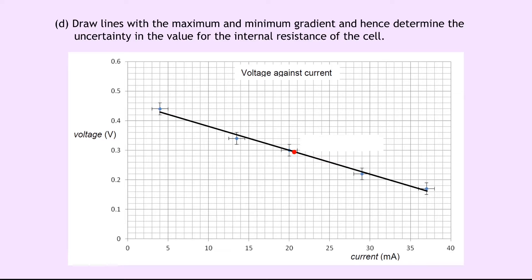Part D says to draw lines with the maximum and minimum gradient and hence determine the uncertainty in the value for the internal resistance of the cell. Our maximum and minimum gradients need to pass through all the error bars and also the centroid, just like the line of best fit. For the maximum gradient, the dashed line passes through all error bars and the centroid, going from the error bar at the top to the error bar at the bottom. For the minimum gradient, the other dashed line goes from the bottom of one error bar to the top of the other, also passing through all error bars and the centroid.